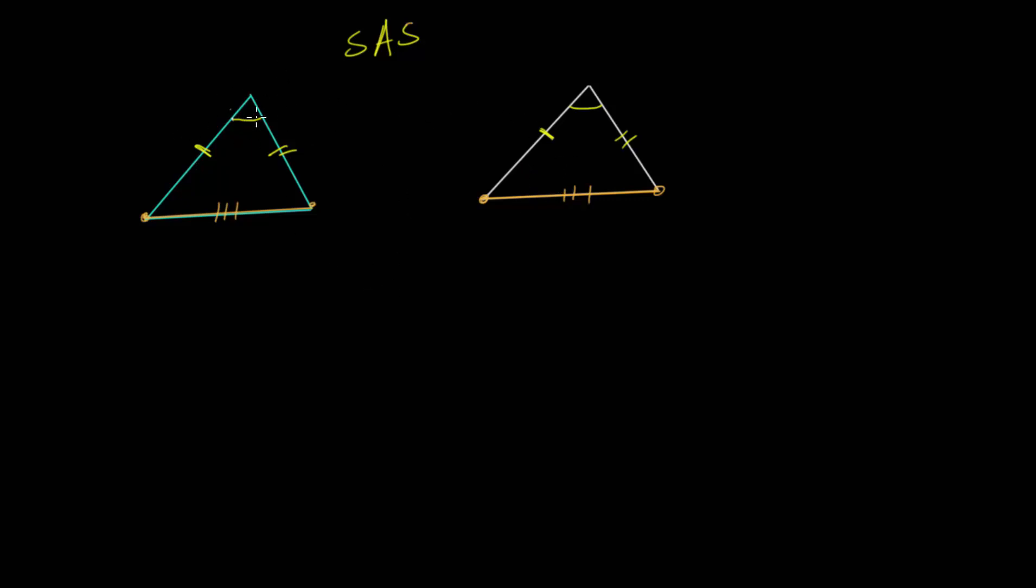And the angle has to be between the two sets of equal sides. And again, this is because the third side can only be connected in one way at some specific length. And that must be true in both of these triangles.